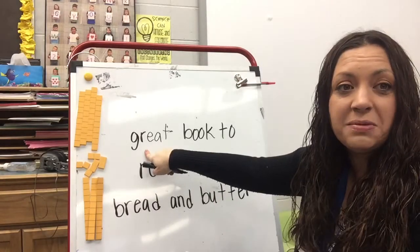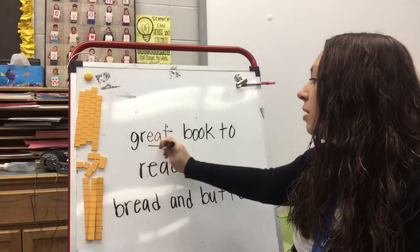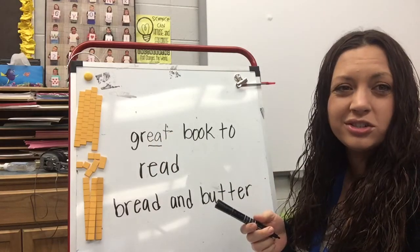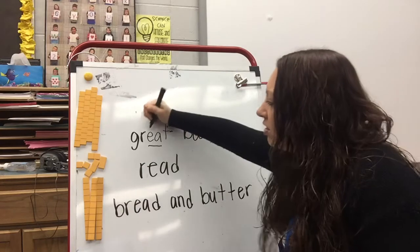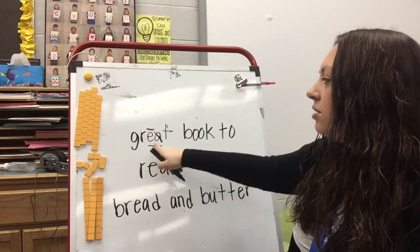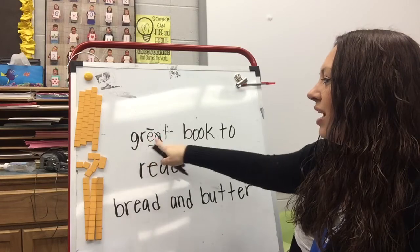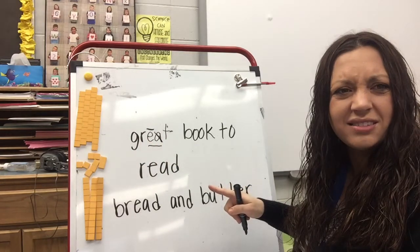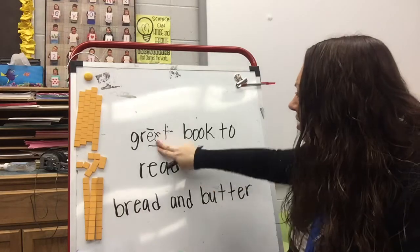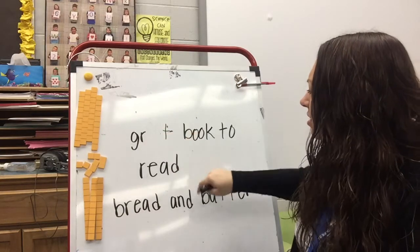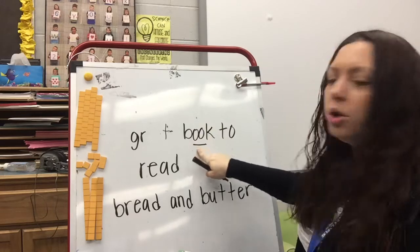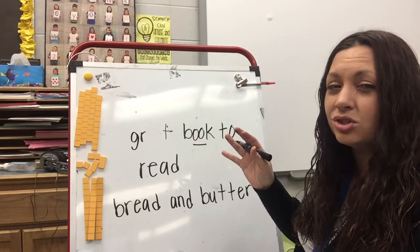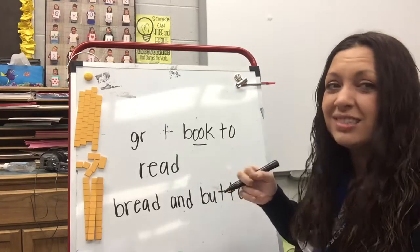In our first word, what do you see? I see that E-A, so I'm going to go ahead and underline it. Which way do you think we should try first? Let's try that long E that we learned yesterday, with a silent A. So if I read it like that, it says 'greet.' Greet? Does that sound right? No. Also, I've got the word 'book' behind it, so we can use that word to help us make sure it makes sense. 'Greet book' doesn't make sense.